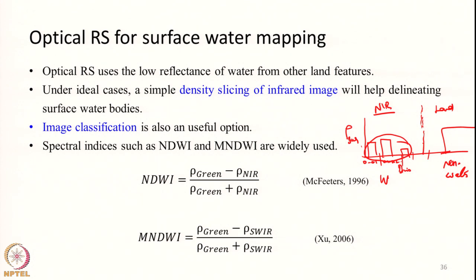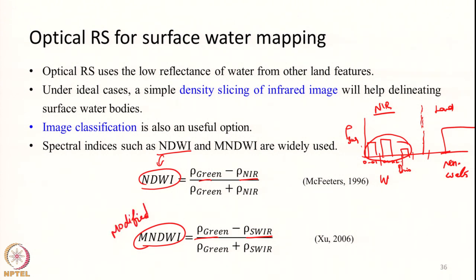Because ideal conditions may not always hold, people have developed spectral indices such as NDWI (normalized difference water index) relating green and NIR, or MNDWI (modified normalized difference water index) relating green and SWIR. Using the characteristic that water has lower reflectance in NIR and SWIR, these indices typically give positive values for water bodies and negative values for non-water bodies. The threshold can vary by region and data quality.